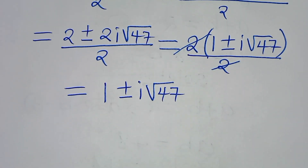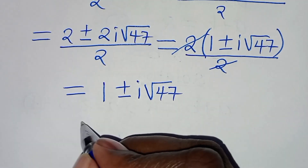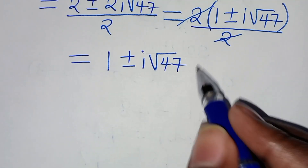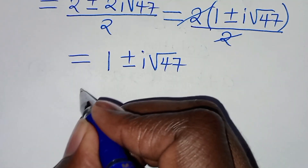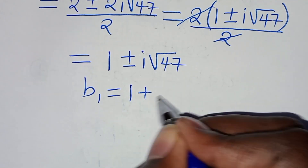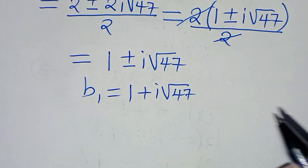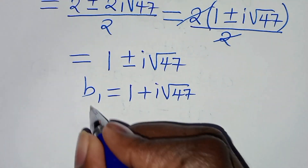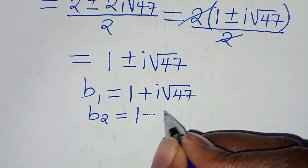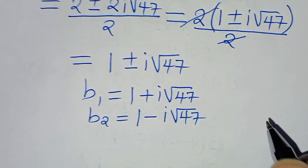This implies that b1 equals 1 plus i times the square root of 47, and b2 equals 1 minus i times the square root of 47.